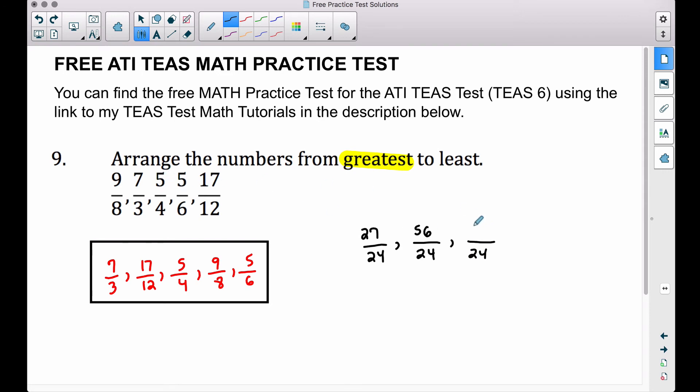The 5/6, 6 times 4 gives us 24, 5 times 4 gives us 20. And then our last fraction, the way we get 24, we take 12 times 2 to get 24, 17 times 2 gives us 34. So these are the same fractions except now we have common denominators.